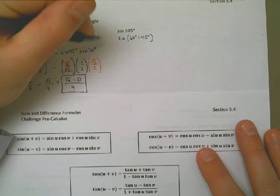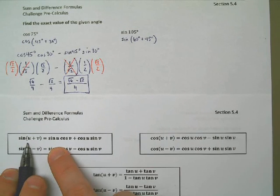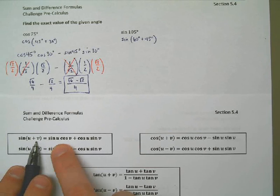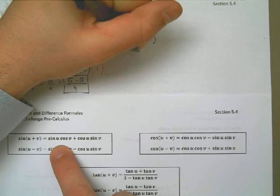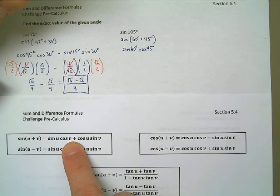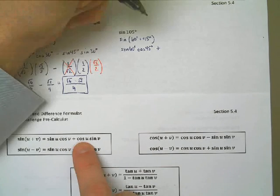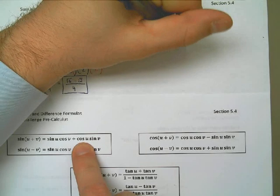So, now, I look at my sum of difference formulas. I'm going to take the sine, and it's going to be two things I add together. So, it looks like the way I have it set up, u is 60 and v is 45. So, I need to do sine of 60 degrees, cosine of 45 degrees. This is going to be the same sine, it's going to be plus this time. And I need to do cosine of 60 degrees, sine of 45 degrees.